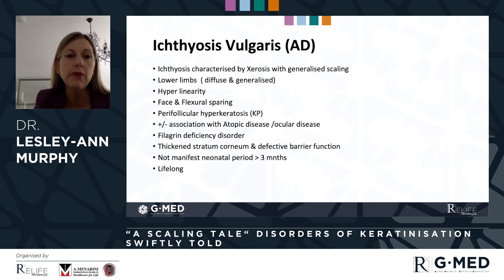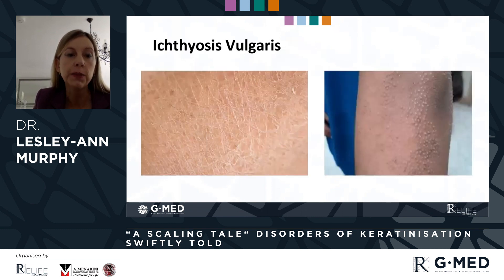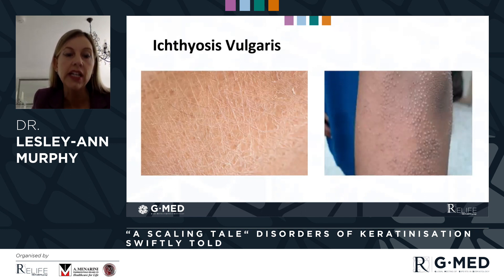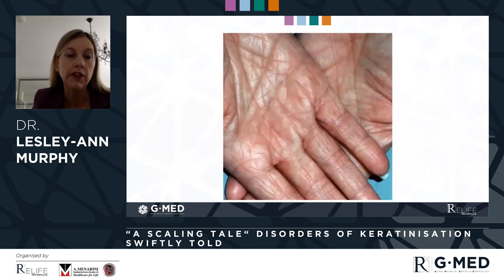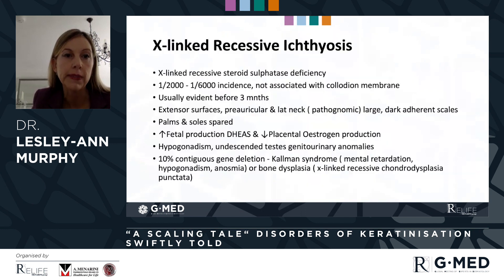It never manifests in the first three months of life, typically has its onset in the first year, and does persist throughout an individual's lifetime. These are photographs of the extent of scale that can be generalized, and also examples of the keratosis pilaris or perifollicular keratosis. This is a very characteristic aged hand appearance demonstrating hyperlinearity of the palms.